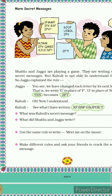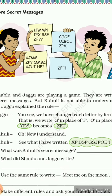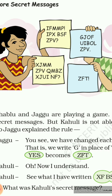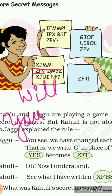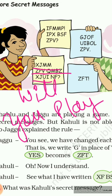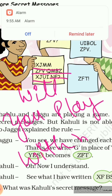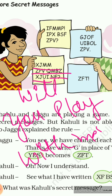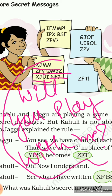Ab hum next message ko padhte hain. Aapka next message hai X Z M M — iska meaning ho jayega W I L L. Z P V ka meaning same hai: Y O U. Q M B Z — yeh aapka ho jayega P L A Y. X J U I — yeh ho jayega W I T H. N F — it means M E. So aapka next message hai: Will you play with me — kya tu mere saath khelogey?